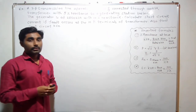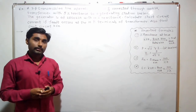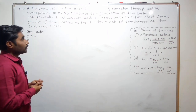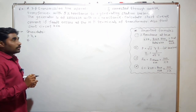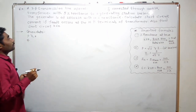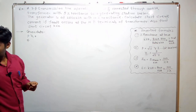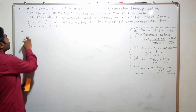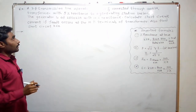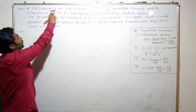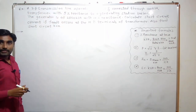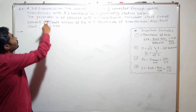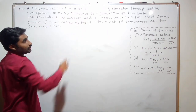While solving examples regarding symmetrical fault calculations, first we have to draw a diagram of the given network. Once we read the example, we will try to draw a diagram. They have given us a transmission line operating at 66 kV and it is connected through a transformer with 5% reactance to a generating station.